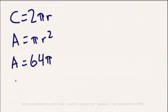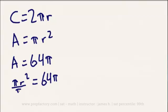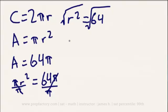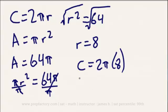Through substitution, we can write that πr² = 64π. Dividing both sides by π, we're left with r² = 64. Taking the square root of both sides gives us r = 8. Now that we have our radius, we plug it back into the circumference equation: circumference = 2π × 8 = 16π. What we've learned is that anytime we're given either an area or a circumference, we can always work backwards to find our radius.